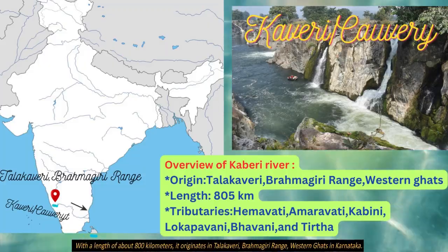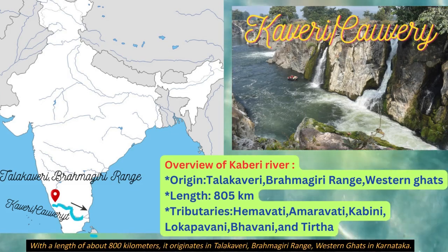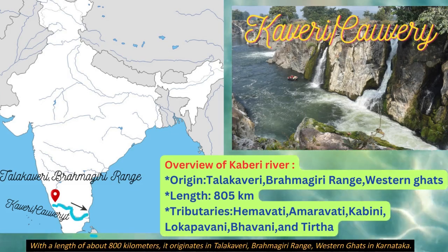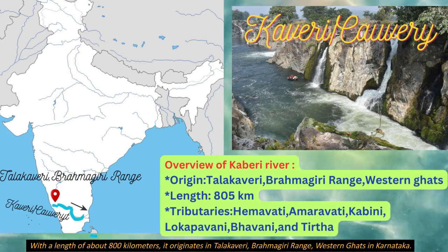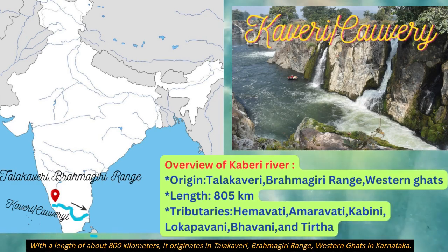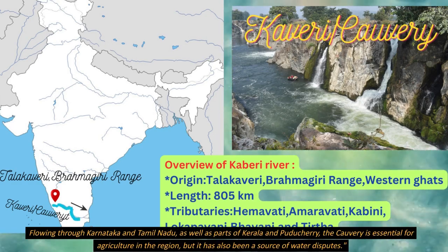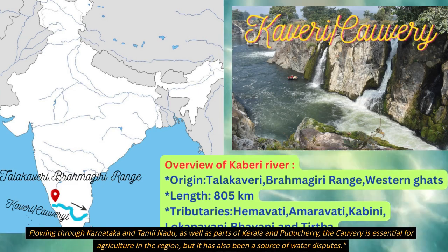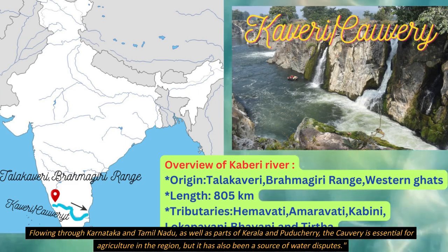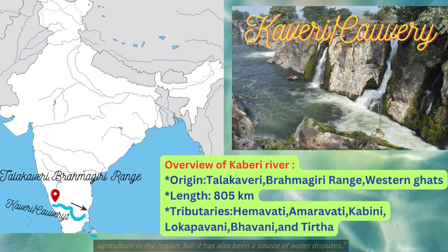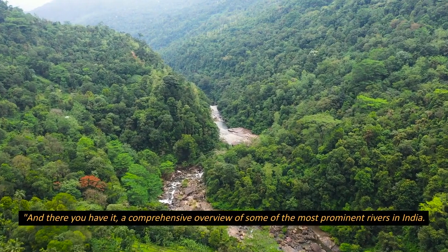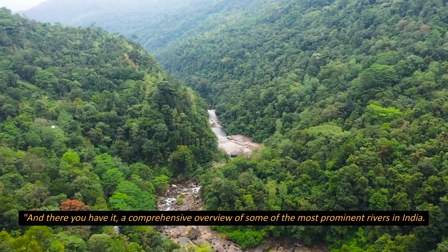Our final river on this journey is the Kaveri river, with a length of about 800 kilometers. It originates at Talakaveri in the Brahmagiri range in the Western Ghats in Karnataka. The famous tributaries are Hemavati, Amaravati, Kabini, Lokapavani, Bhavani, and Tirtha. Flowing through Karnataka, Tamil Nadu, as well as parts of Kerala and Puducherry, the Kaveri is essential for agriculture in the region but has also been a source of water disputes.